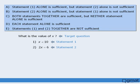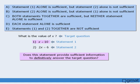Now let's answer this particular question. The target question asks us to find the value of x. We'll begin with statement 1, which tells us that x is less than 10. Does statement 1 provide sufficient information to definitively, without a doubt, answer the target question? The answer is no. Statement 1 tells us that x can equal any number less than 10 — x might equal 8, or 2, or 3.7, and so on. Since statement 1 does not provide sufficient information, we say that this statement is insufficient.